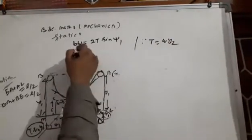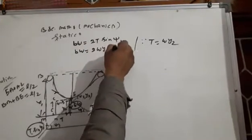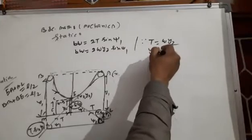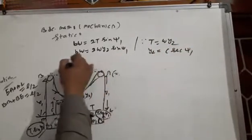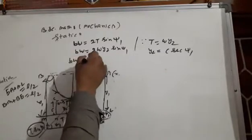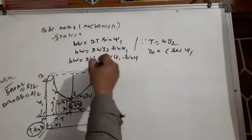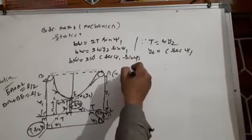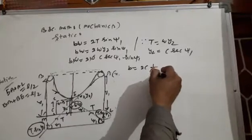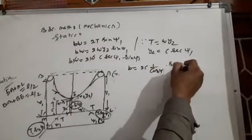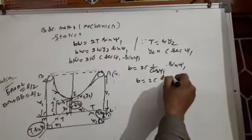At point E, this distance is y2. And vw equal to 2·(w/2)·sinθ1. And y equal to c·cosecθ1, so c·cosecθ1. And vw equal to 2w·cosecθ1·sinθ1, and w cancels. And vw·2c equal to cosecθ1·cosecθ1·sinθ1. So v equal to 2c·tanθ1.